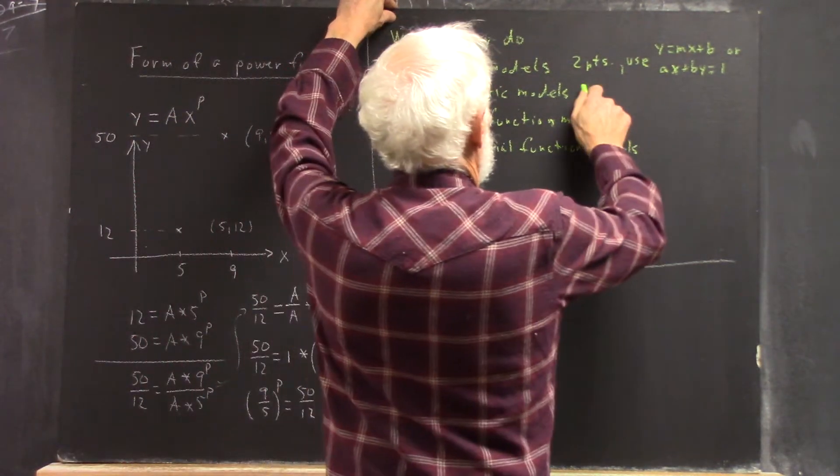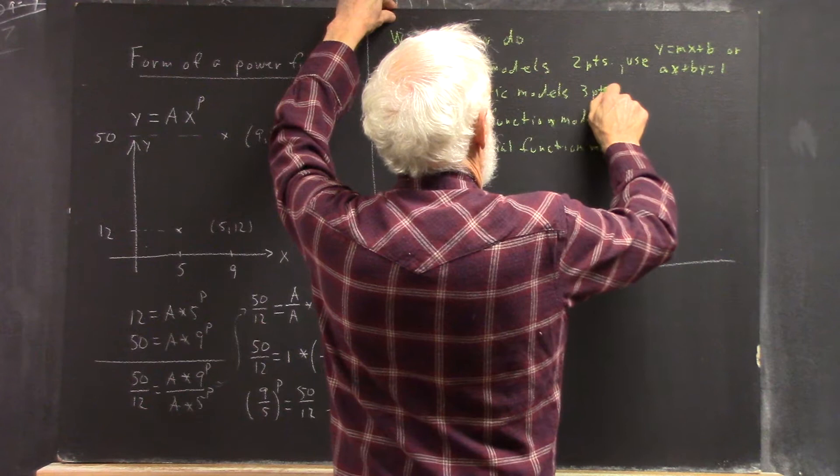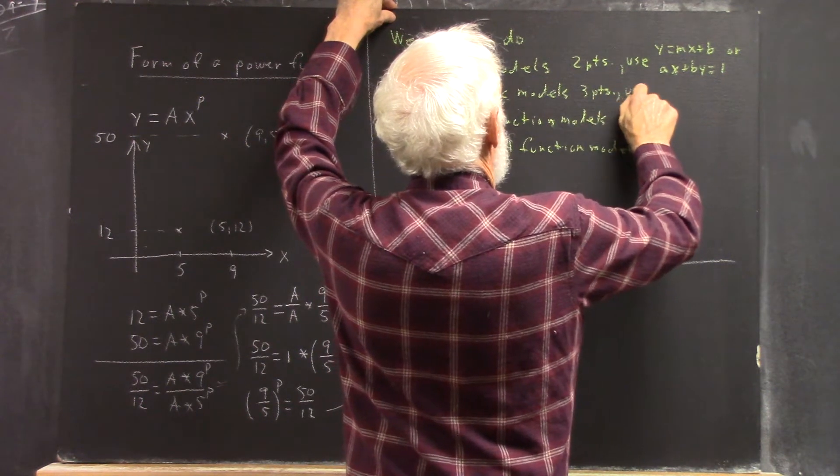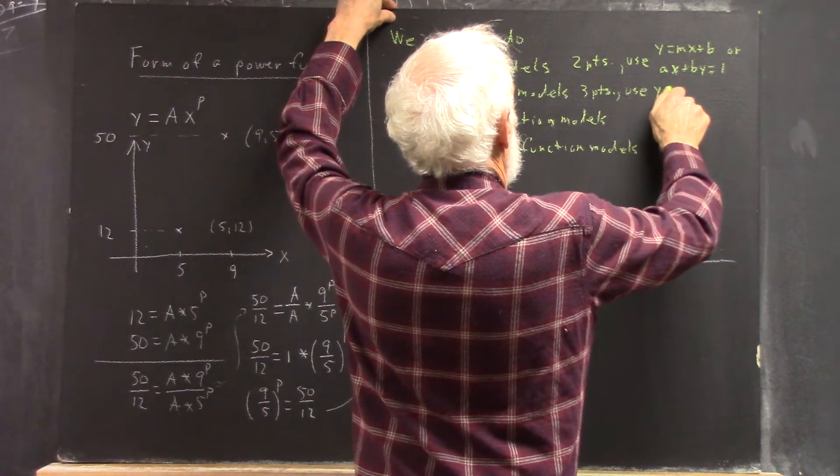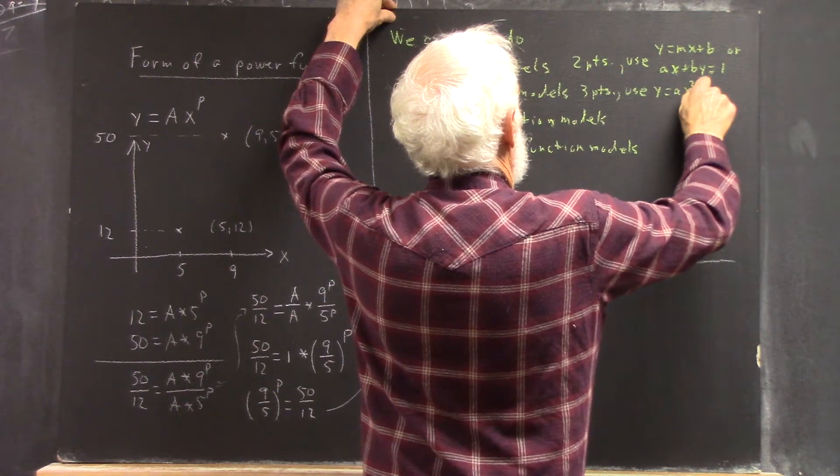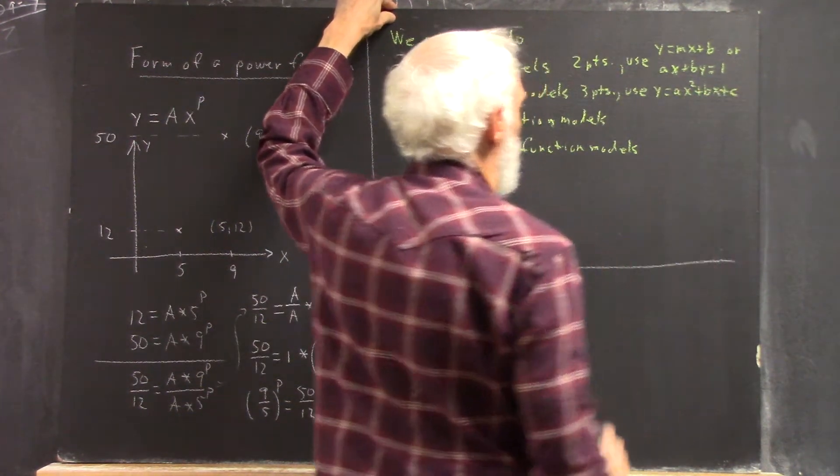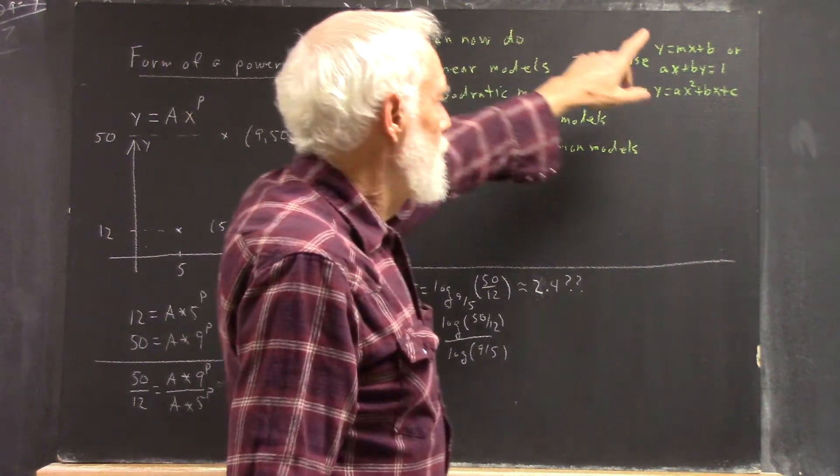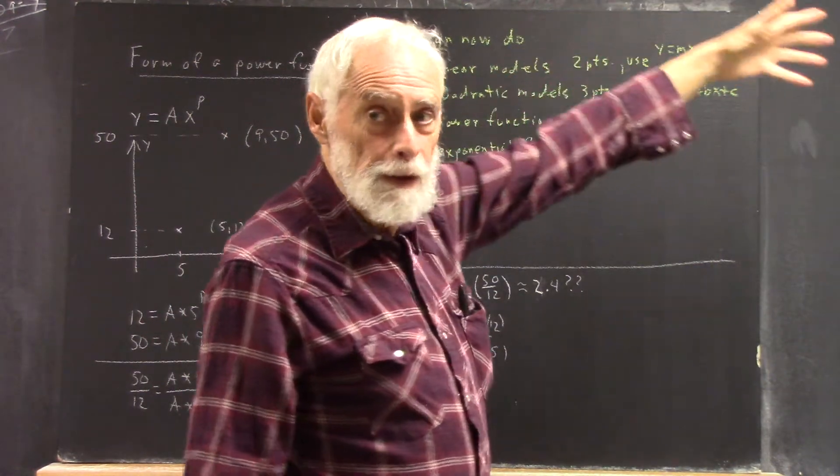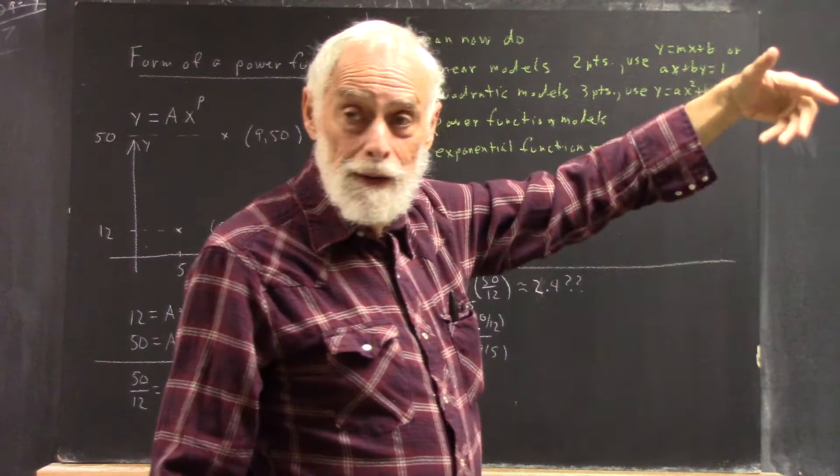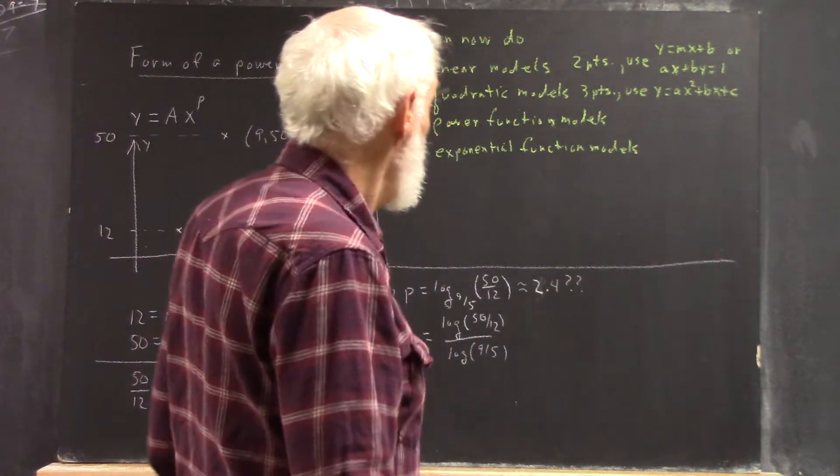Quadratic models, three points, and use y equals ax squared plus bx plus c. Of course, it doesn't have to be y and x. It could be p and t. It could be y and t, right? Okay.